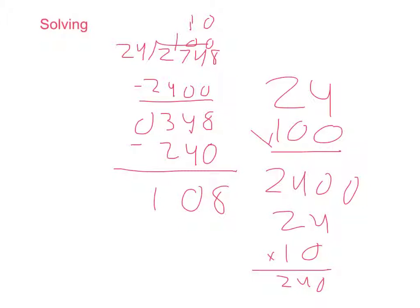24 goes into 108 about 4 times. When you do 24 times 4, you get 4 times 4 is 16 and you carry the 1, and 4 times 2 is 8, and when you add the 1, it's 96. When you subtract that from 108 and put the 4 on top because that's the number you multiply by...